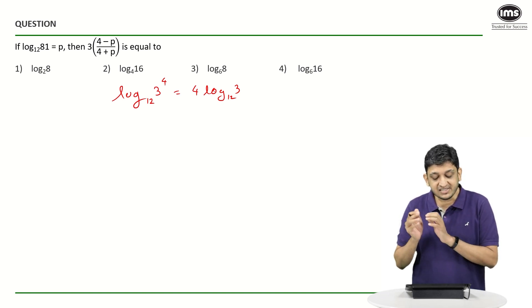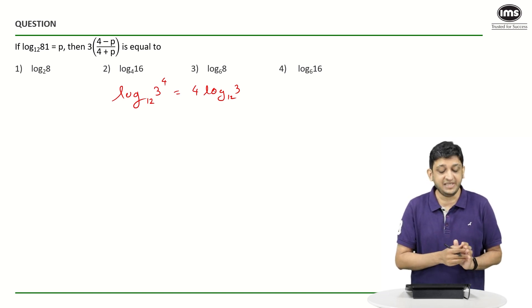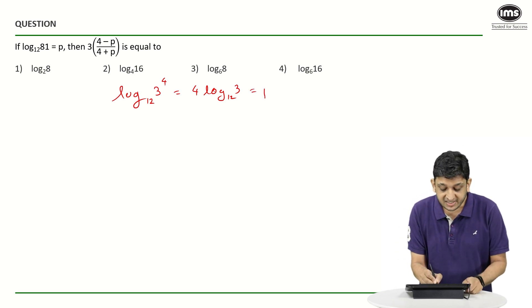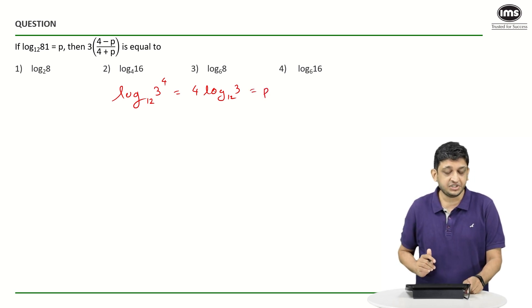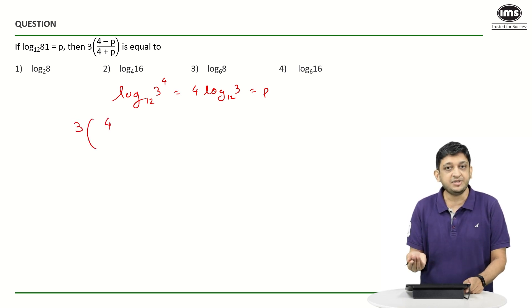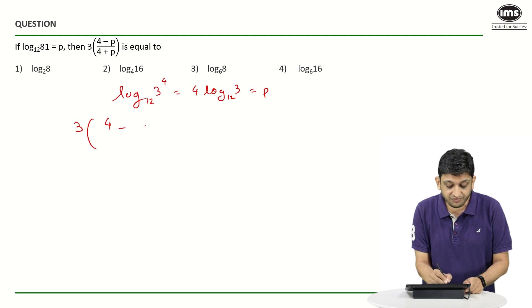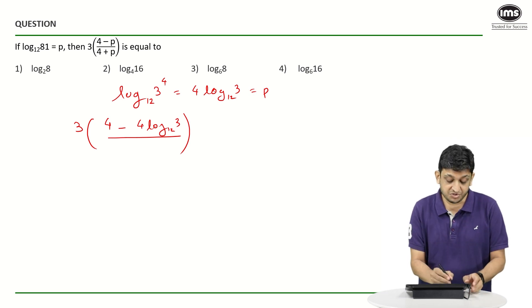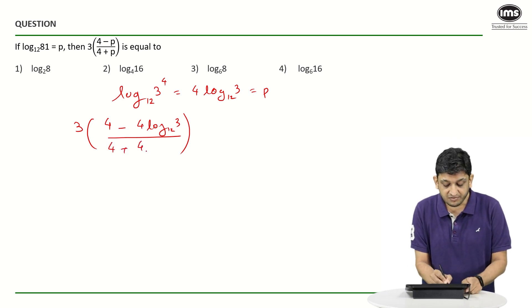Now, what we can do here is we can simply substitute the value of P in the expression that we have to find the value of. This is nothing but P as has been given in the question. We have to find the value of 3 times 4 minus 4 log 3 to the base 12 divided by 4 plus 4 log 3 to the base 12.